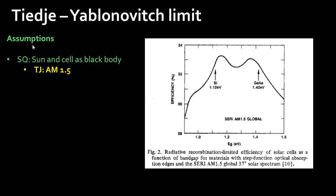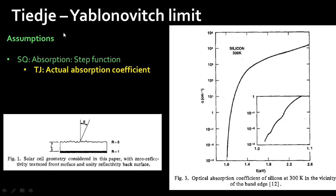The very first thing they did was, instead of assuming the sun to be a black body, they assumed the spectrum from the sun to be equivalent to the AM 1.5G spectrum. If you do that — taking into account only radiative recombination — you see a much higher efficiency. You get efficiencies of close to 33%, just by changing the spectrum from the ideal black body spectrum given by Planck's law to the actual AM 1.5G spectrum observed on Earth.